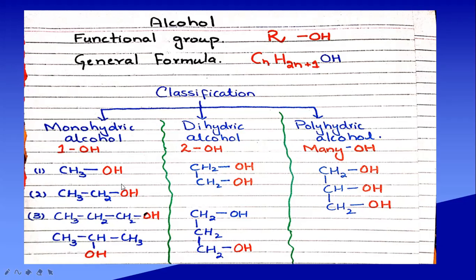These are all examples of monohydric alcohol because they contain one hydroxyl group. The second type is dihydric alcohol — those which contain two hydroxyl groups — and these are known as glycol. Glycol is derived from 'glycos' meaning sweet, so glycol has a sweet taste. For example, if two hydrogens are removed from ethene and two hydroxyl groups are attached, this is known as ethylene glycol. Another example is propylene glycol, in which one hydroxyl is attached to the first carbon and one to the third carbon.